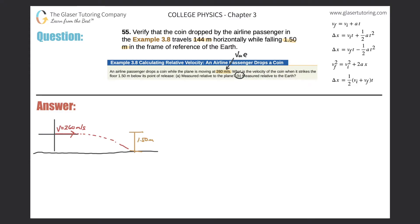So what we need to first figure out: here's the drawing. The plane's moving 260 meters per second relative to the Earth. The coin on the plane is going to drop only 1.5 meters. But relative to the Earth, we want to find now the total horizontal distance it traveled.